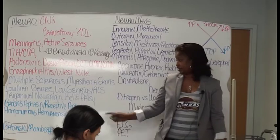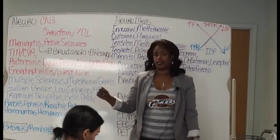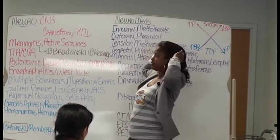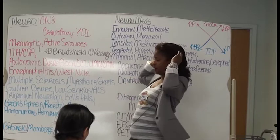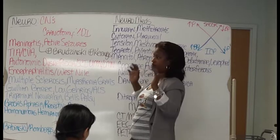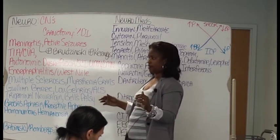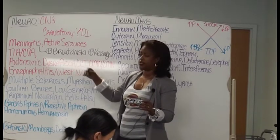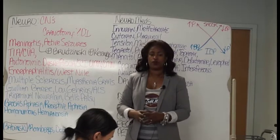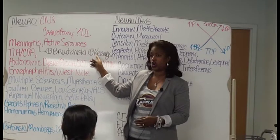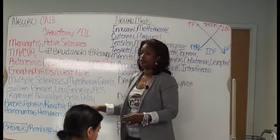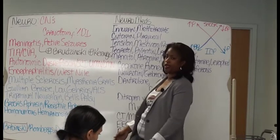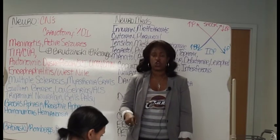Brudzinski: the nurse has the patient supine, lying back, and gently pushes the head up. With just a little bit of flexion of the neck, the patient has flexion at the hip — that's what's on the test. Kernig's sign: K for Kernig, K for knee. The nurse has the patient supine, lifts the leg up, and as she's lifting the leg they have pain behind their knee.